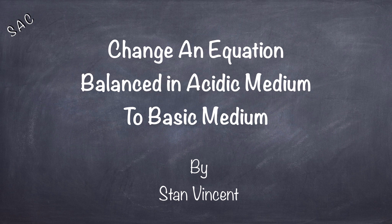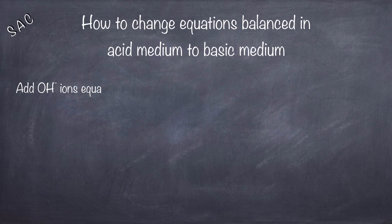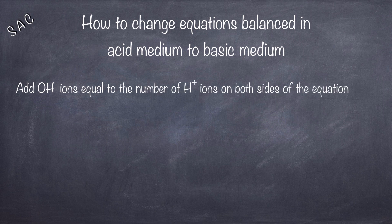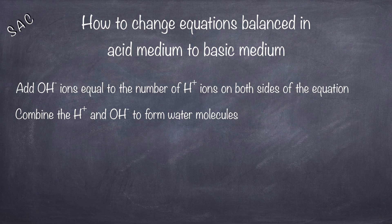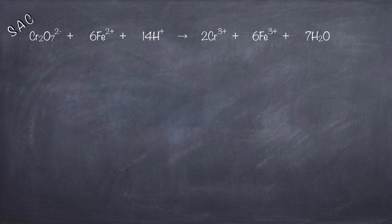What we are going to do today is change an equation that's balanced in acidic medium to a basic medium. Here is what we will do first: we will add OH⁻ ions equal to H⁺ ions on both sides of the equation, combine the H⁺ and OH⁻ ions to form water, then cancel out water molecules that are common on both sides. That should give us an equation that's balanced in basic medium.